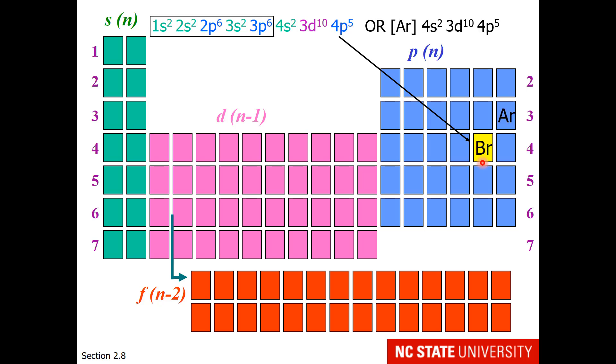That is how we could write the full electron configuration of bromine. That's a very long string, so it's more typical to go up and to the right and choose the noble gas and put it in square brackets. So we can say argon in square brackets instead of 1s2, 2s2, 2p6, 3s2, 3p6.